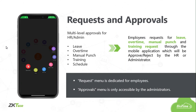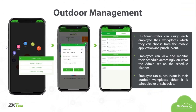Requests and approval work the same way as previously discussed, but on mobile. There will be multi-level approvals for HR admin for any type of requests, like leave, overtime, manual punch, training, and schedule. Employees submit requests through the mobile app, which will be approved or rejected by the HR or administrator. You can find it on the request menu if you are the employee, and on the approvals menu if you are the administrator. The HR or administrator can also assign each employee their workplaces, which they can choose from the mobile application and punch in and out. Employees can view and monitor their schedule accordingly on what the admin set on the schedule planner.